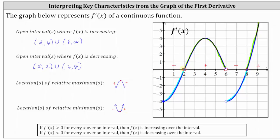Notice that at x equals 2, the derivative changes from negative to positive, and therefore the function changes from decreasing to increasing, resulting in a relative minimum at x equals 2.